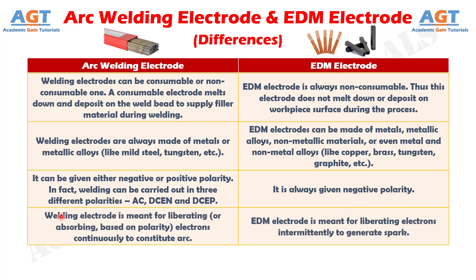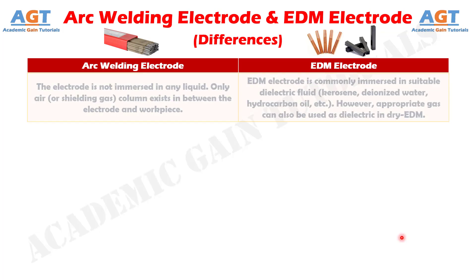Number 4: arc welding electrode is meant for liberating or absorbing, based on polarity, electrons continuously to constitute the arc, whereas electric discharge machining electrode is meant for liberating electrons intermittently to generate spark.